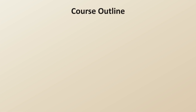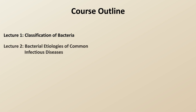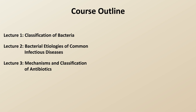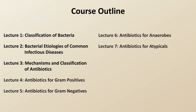Here is the course outline. Lecture 1 will discuss the classification of bacteria. Lecture 2 will discuss the bacterial etiologies of common infectious diseases. Lecture 3 will provide a classification scheme for antibiotics. Lectures 4 through 7 will discuss antibiotic selection for gram-positive, gram-negative, anaerobic, and atypical infections respectively.